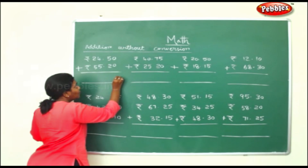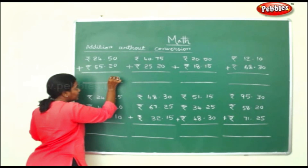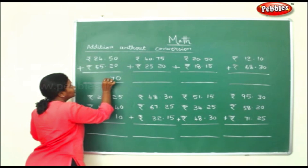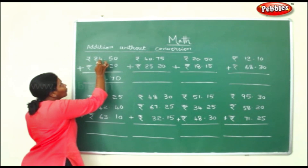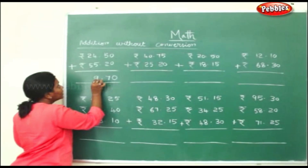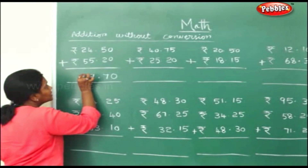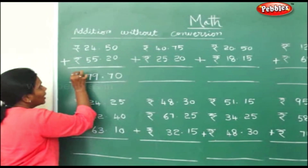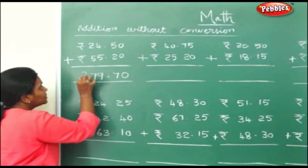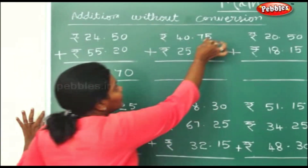0 plus 0 is 0. 5 plus 2 is 7. Put the dot. 4 plus 5 is 9. 2 plus 5 is 7. You have to write the rupee symbol here.